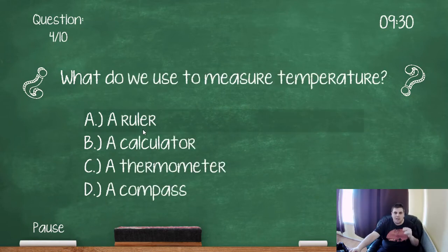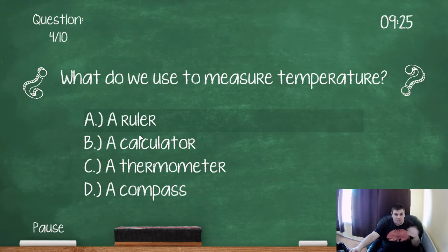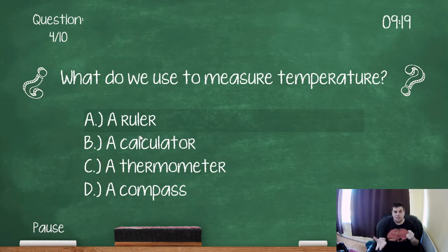What do we use to measure temperature? So rulers for length, calculator we use for maths, compass is, well it depends what compass you're talking about, you can use it to make a circle in maths or you can use a north-east-south-west compass but it's a thermometer.